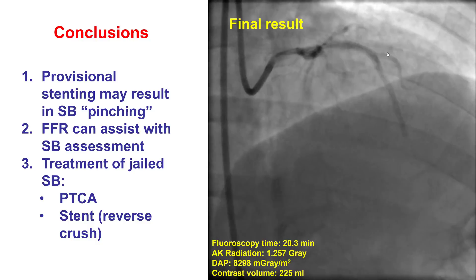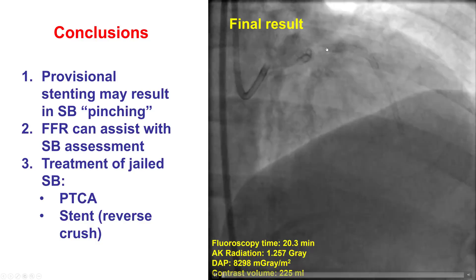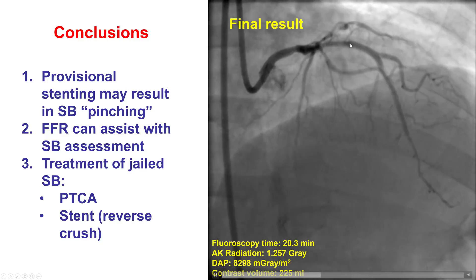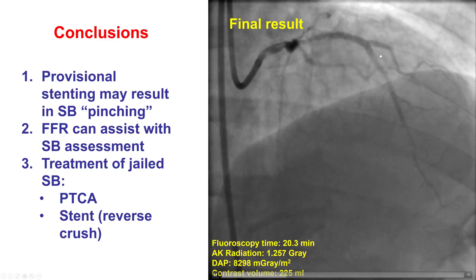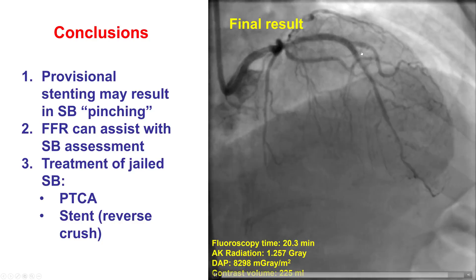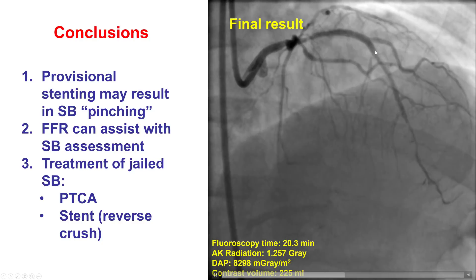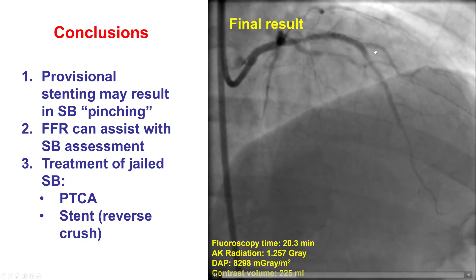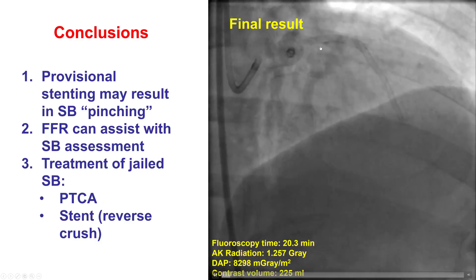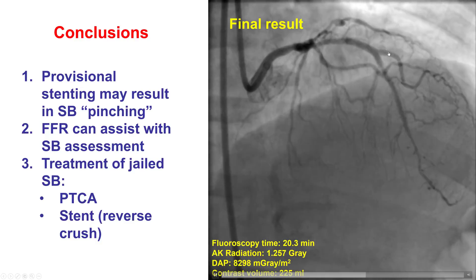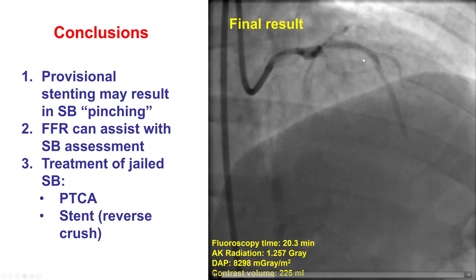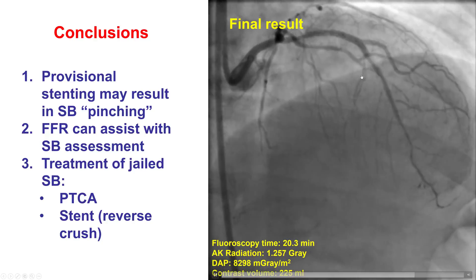The key steps of the reverse crush are: wire through the proximal strut; place a balloon in the main vessel; deploy the stent into the side branch with the balloon sitting undeployed in the main vessel; remove the stent balloon; crush the stent struts protruding into the main vessel by inflating the main vessel balloon; then rewire into the side branch — which can be facilitated by a dual-lumen microcatheter such as a Twin Pass — and finally perform kissing balloon inflation and possibly a final POT.